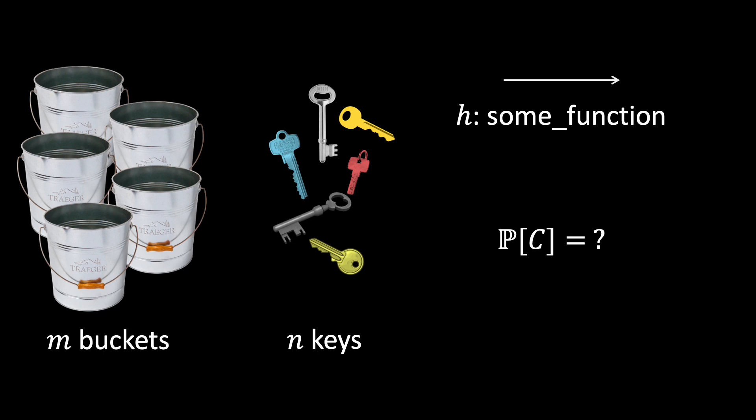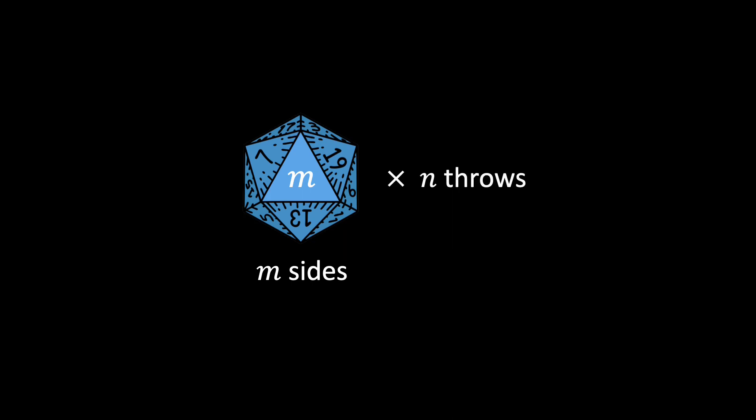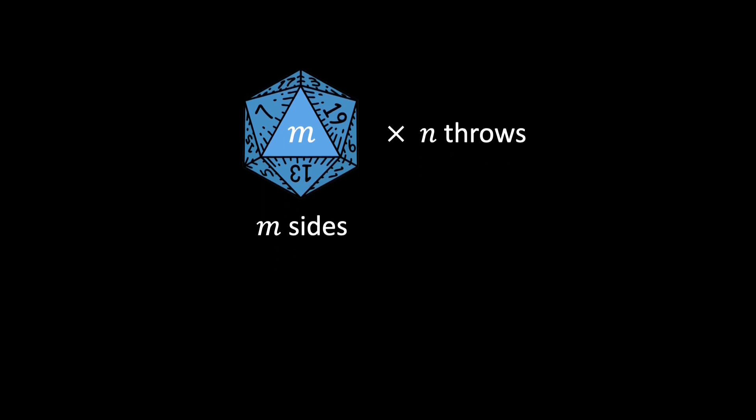We can find an alternative formulation of this problem that might be familiar. If we imagine the computation of N hashes as throwing a die with M sides, N times, we can also ask, what is the probability of getting a value more than once? This is equivalent to the well-known birthday problem.